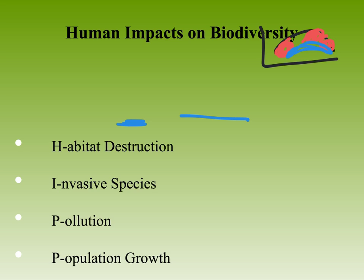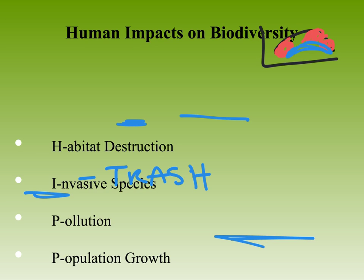You also have generalists and specialists. Species that only live in specific habitats are more likely to go extinct. For generalists, think of animals that live pretty much anywhere and can eat pretty much anything — things that can subsist off a wider range of resources. Those are your generalists.